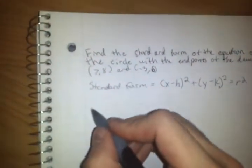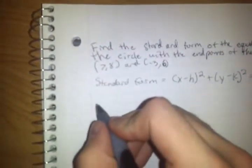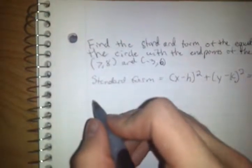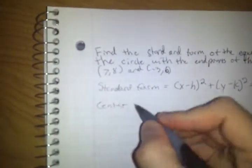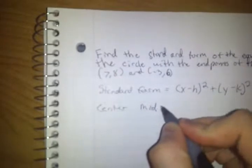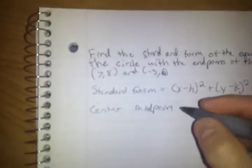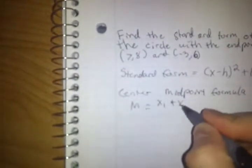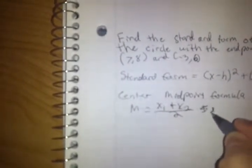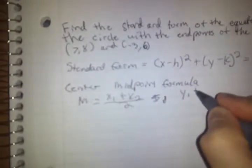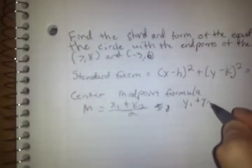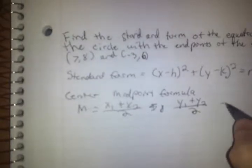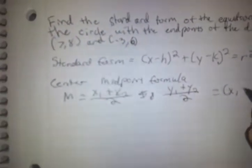Next thing we have to do is find your center. To find the center, we are going to use the midpoint formula. That simply states m = (x₁ + x₂)/2, (y₁ + y₂)/2, which equals your x and y coordinates.